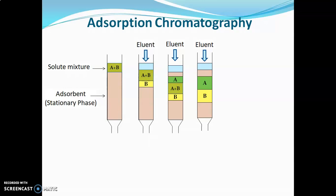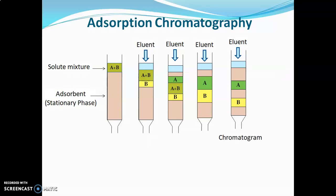One boundary is common in between them, so eluant is continuously added. Now in this stage A and B components are distinctly separated. Component A, having greater affinity for the adsorbent, is adsorbed in the upper part of the column, and component B, having less affinity for the stationary phase, is adsorbed in the lower part. When such distinct colored bands are separated, the column is known as a chromatogram, and this process is known as development of the chromatogram. These colored bands are also known as zones.